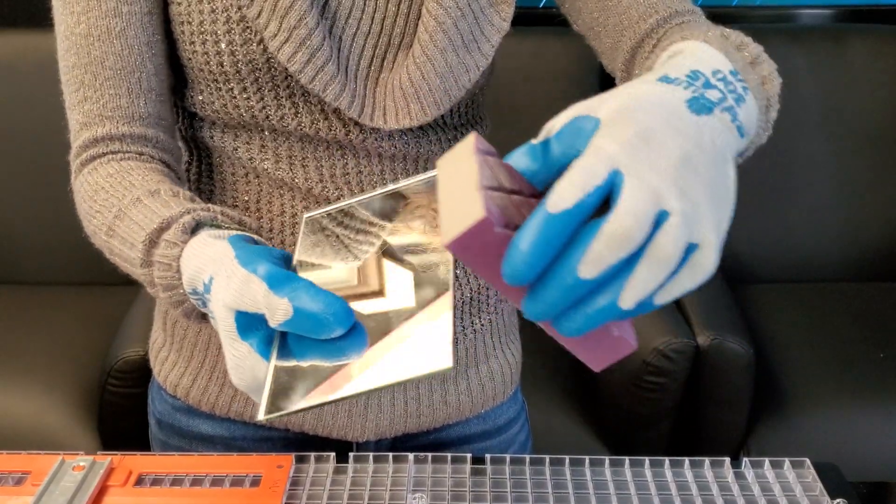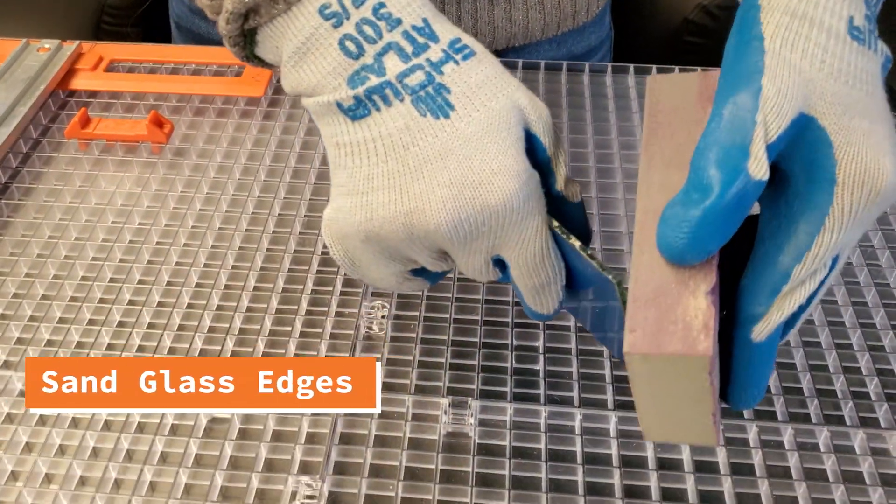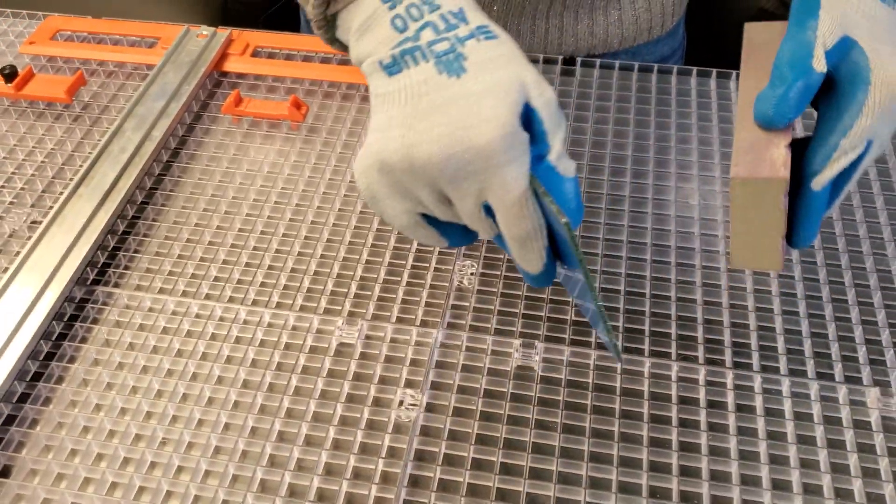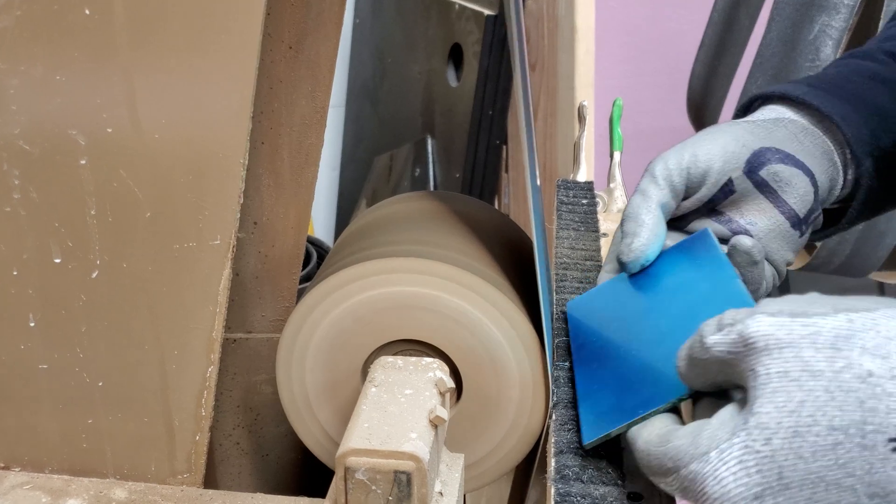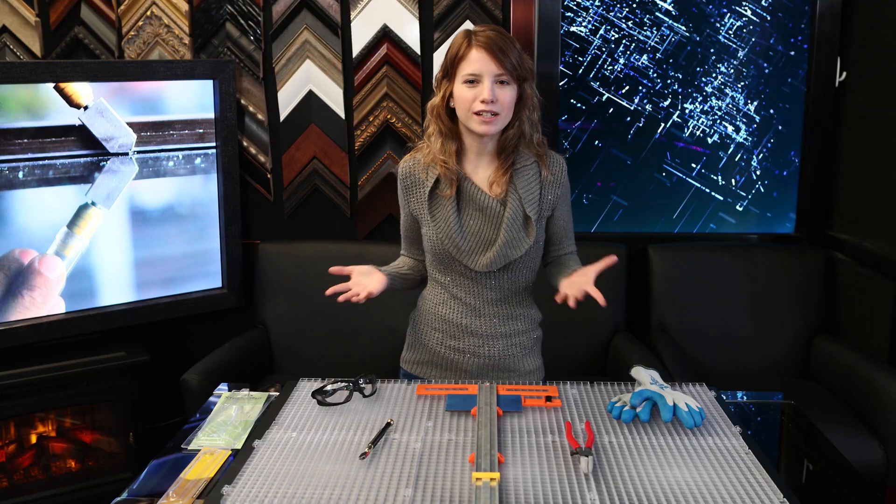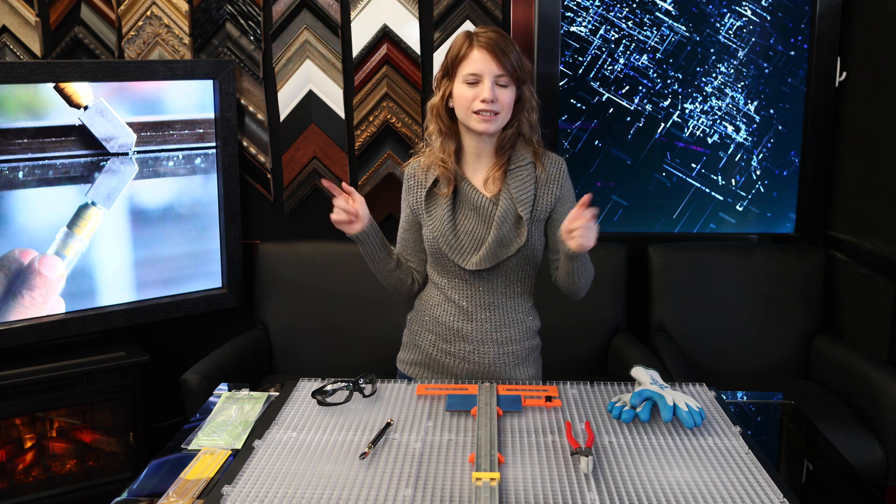Then the next step is that you will want to sand the edges of the glass. As you see here, I am using a sanding block. You will want to apply firm pressure while you hold it at a 45 degree angle. In our facility, we also like to use a belt sander. For your convenience, I am leaving a complete list of our favorite tools in the description below.